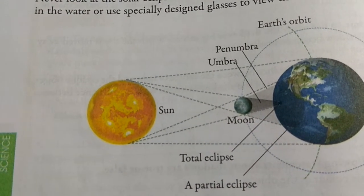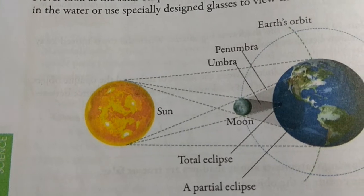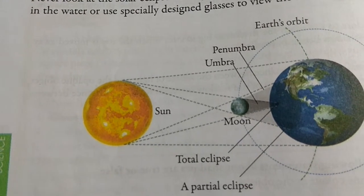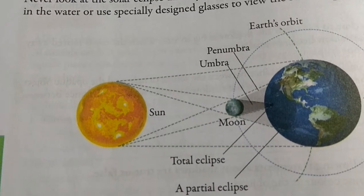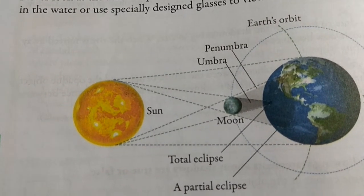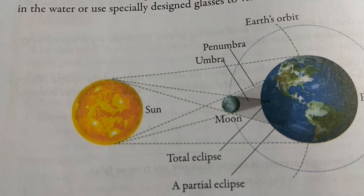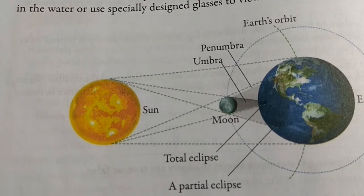Students, it is always advised never to look at the solar eclipse directly. It could damage your eyes. Look at its reflection in the water or use specially designed glasses to view the solar eclipse.